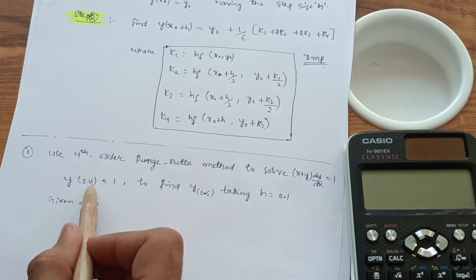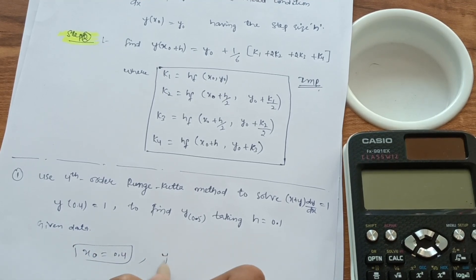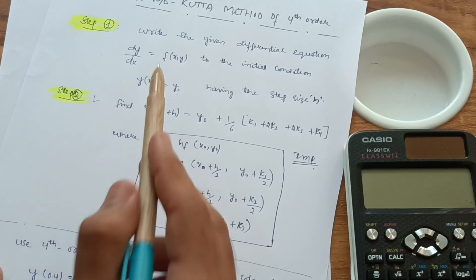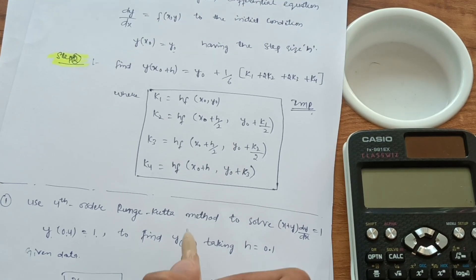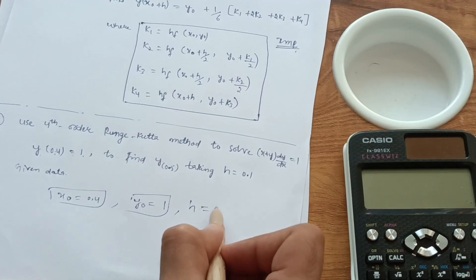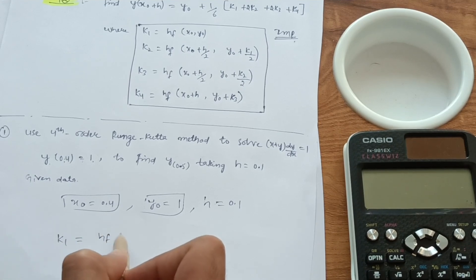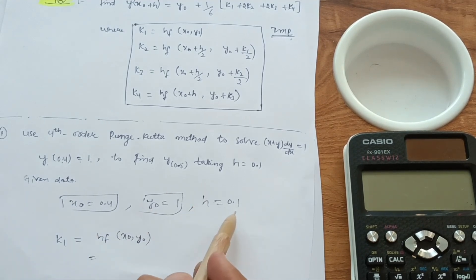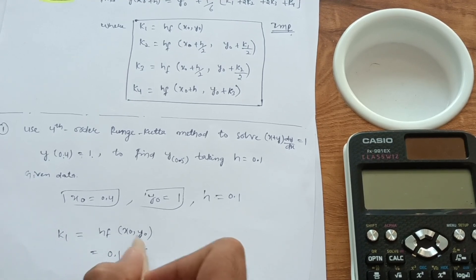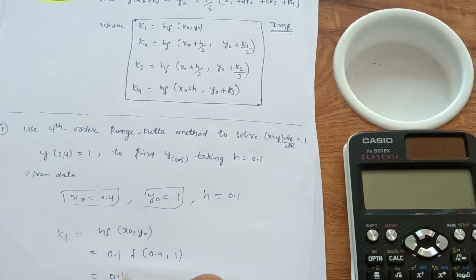First, write the given data: y(0.4) = 1, so x₀ = 0.4 and y₀ = 1, since y₀ = y(x₀) = 1. Step size h = 0.1 is also given. Now calculate k1: k1 = h·f(x₀, y₀) = 0.1·f(0.4, 1).